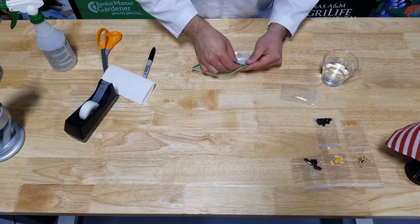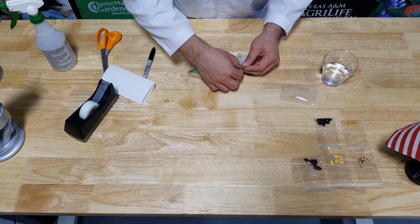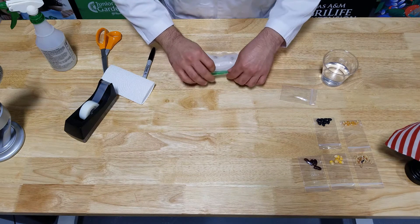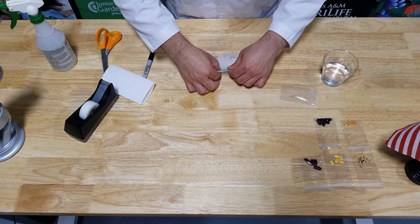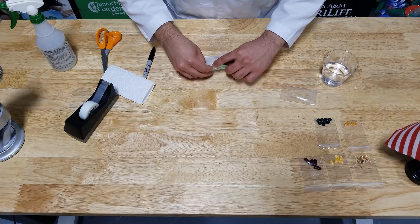Now when I go to close our baggie, our seeds still need a little bit of air, so I do not want to close it completely. I want to close it probably about three quarters of the way so they can still get some air in there.